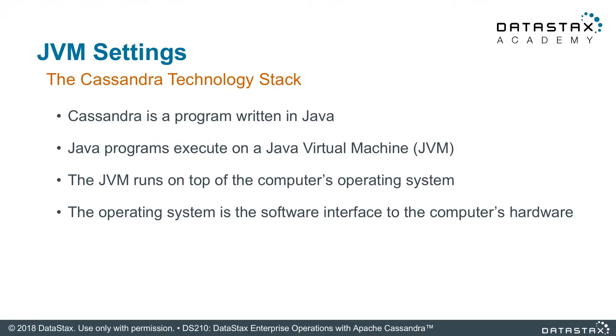Hi, I'm Jamie King. Let's talk about JVM settings. Any application you execute runs on top of layers of architecture. Apache Cassandra is a Java application, hence it runs on the Java Virtual Machine, or better known affectionately as the beloved JVM. The JVM runs on top of your operating system, which further runs on top of your hardware.